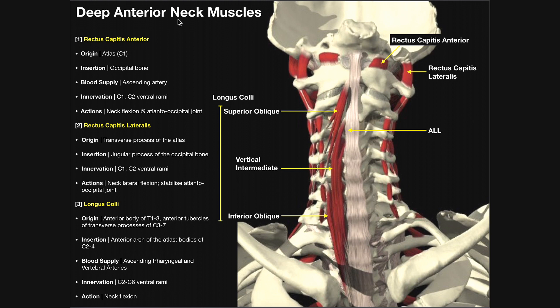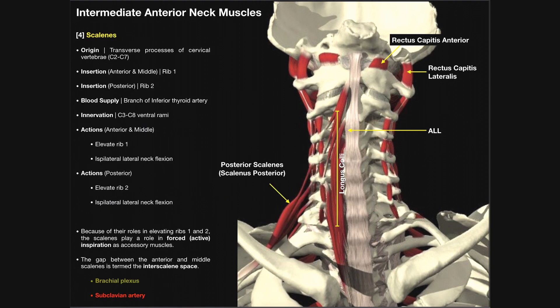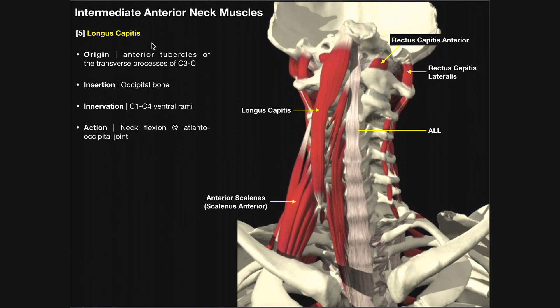We're now going to switch gears and look at the intermediate layer, one layer superficial to the deep layer. We're going to see two major muscles here: the scalenes, which are really a group of muscles, and then the longus capitis.